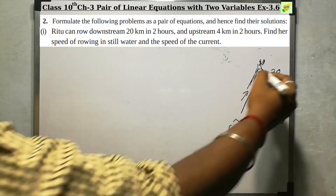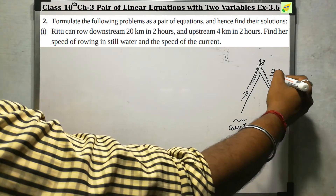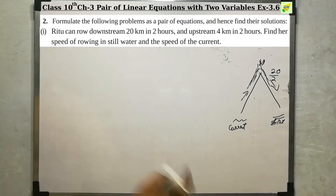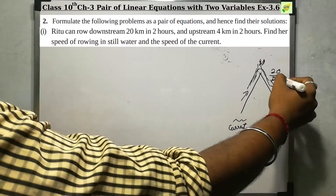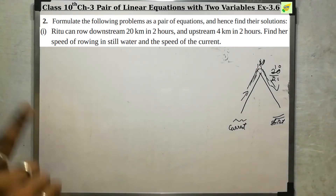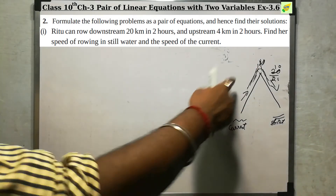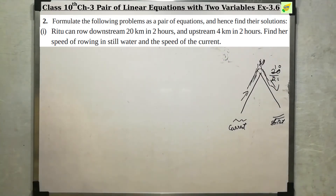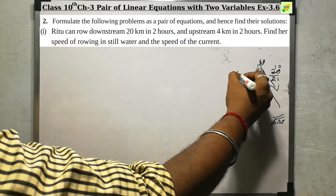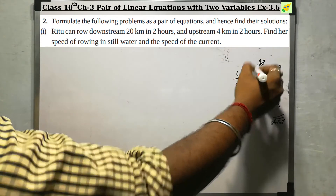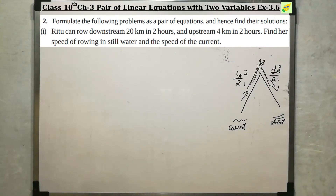Distance divided by time: 2 hours is 20 km, so 1 hour is 10 km — that is 10 km per hour downstream. For upstream, 4 km in 2 hours means 1 hour is 2 km.